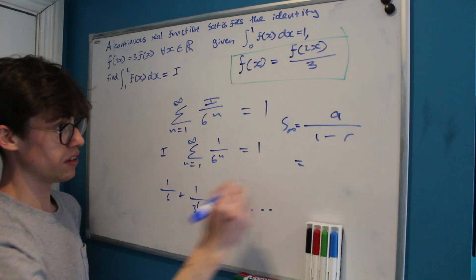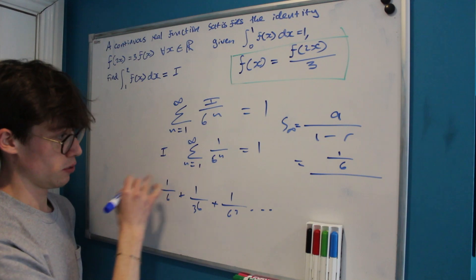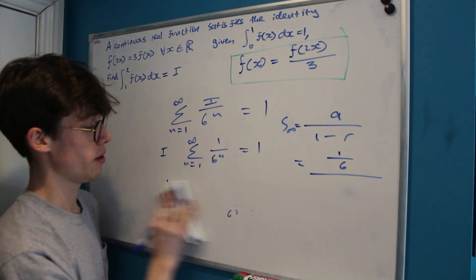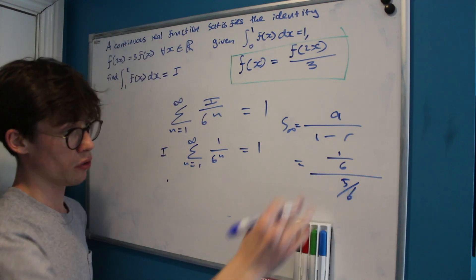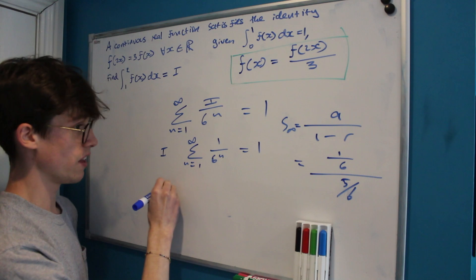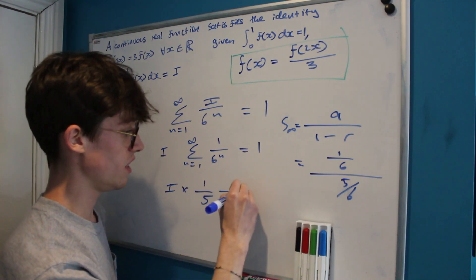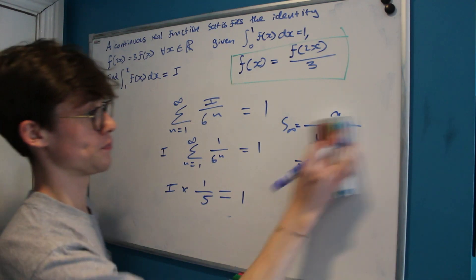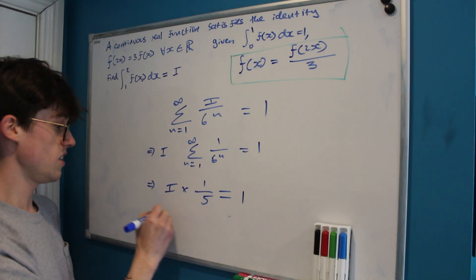Now a is our first term, which is 1 over 6, and our common ratio is also 1 over 6, and 1 minus 1 over 6 is 5 over 6. So if we multiply by 6 on the top and the bottom, we get that i times 1 over 5 is equal to 1.